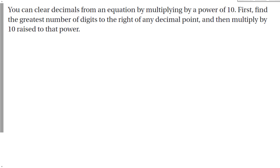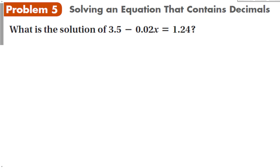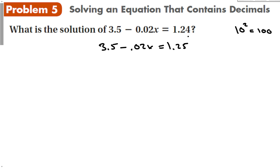Our last example shows us that we can clear the decimals from an equation by multiplying by a power of 10. First, find the greatest number of digits to the right of any decimal point, then multiply by 10 raised to that power. If I have this equation, I could subtract 3.5 from both sides and divide out the negative 0.02, or I could note there are two decimal places, so I multiply everything by 10 squared, which is 100. Taking this whole equation and multiplying by 100 will clear all the decimals.